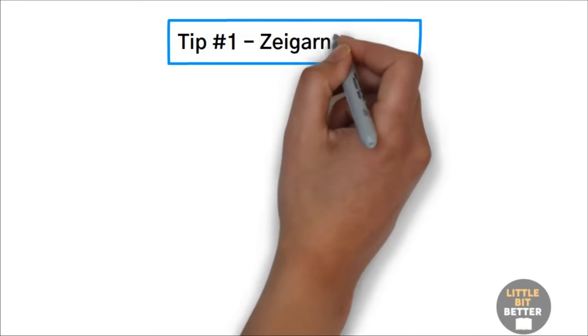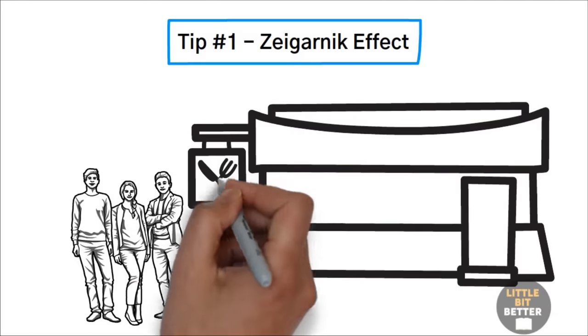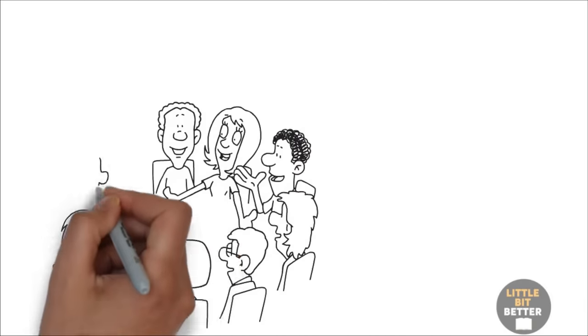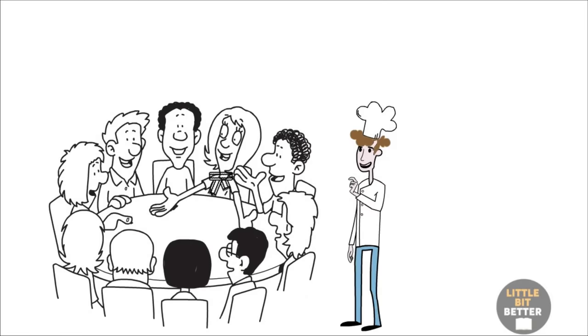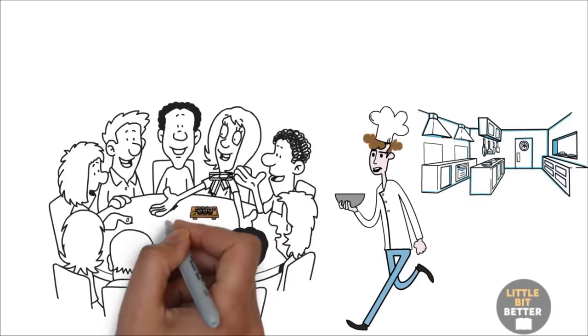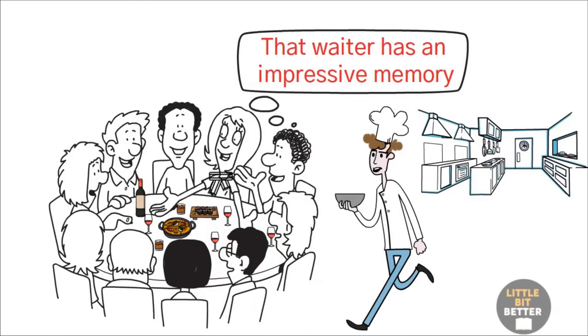Tip number one: Zeigarnik effect. A group of university students and professors visits a restaurant in Berlin. The waiter takes order upon order, including special requests, but does not write anything down. Against all odds, after a short wait, everyone receives exactly what they ordered. That waiter has an impressive memory, they think.